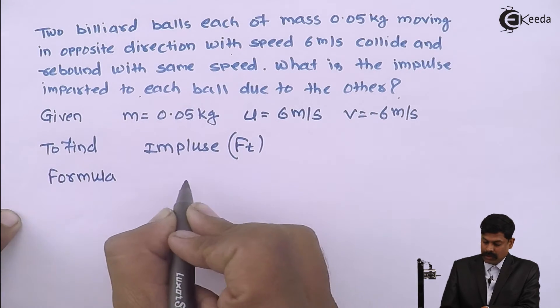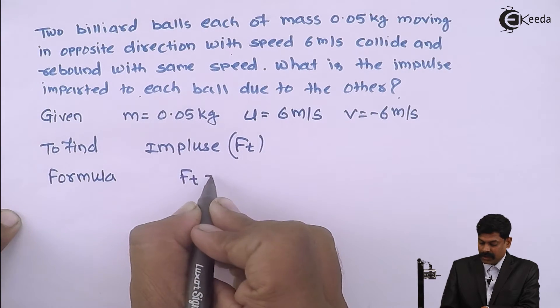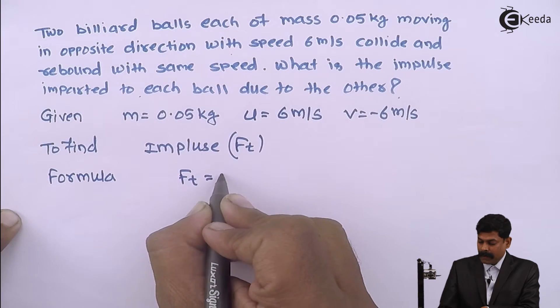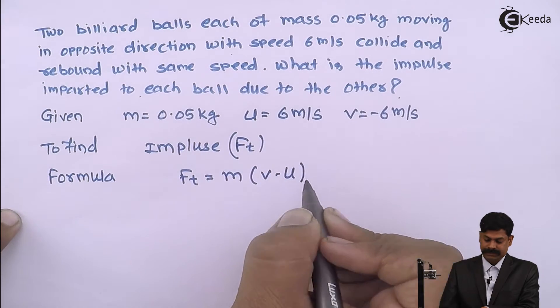The formula we will use: Ft equals mass into (v minus u).